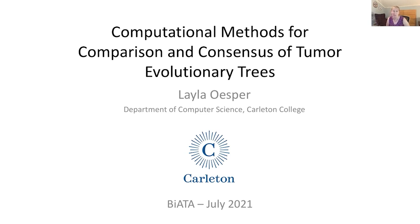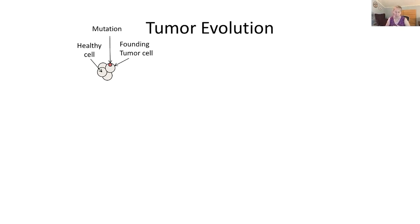I'm going to be talking about methods for comparison and consensus of tumor evolution trees. I want to start by talking about what tumor evolution is. Tumors or cancer actually develops as the result of an accumulation of somatic mutations — those that occur during the lifetime of an individual. This process begins when some cell acquires a mutation that provides it some sort of selective advantage, allowing it to proliferate at a faster rate, leading to the start of the development of a tumor.